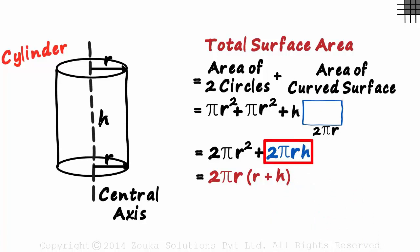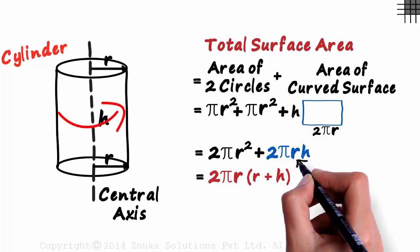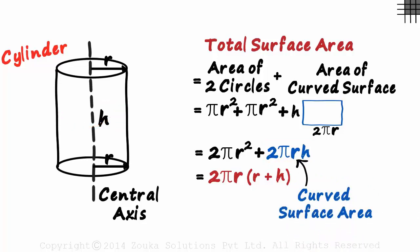What is this blue part then? It's called the curved surface area of the cylinder. 2πrh.